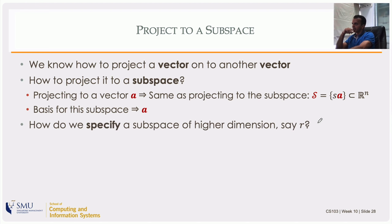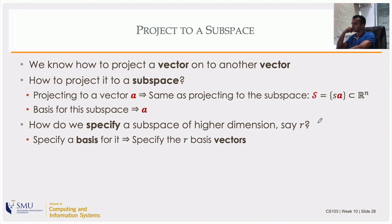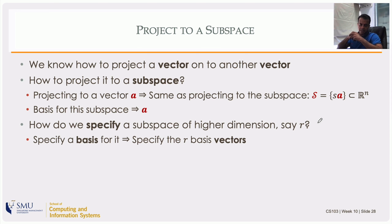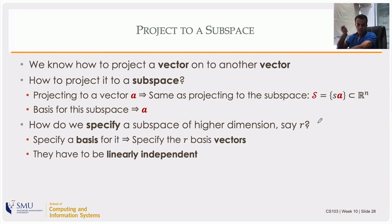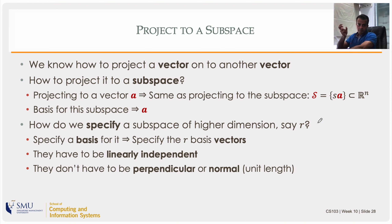Now suppose the subspace is not just one-dimensional but an r-dimensional subspace — say r equals two. To specify the subspace, you specify the r basis vectors that define it in Rⁿ, and then we project onto that space. The basis vectors must be linearly independent — that is a requirement — but they don't have to be perpendicular or normalized.